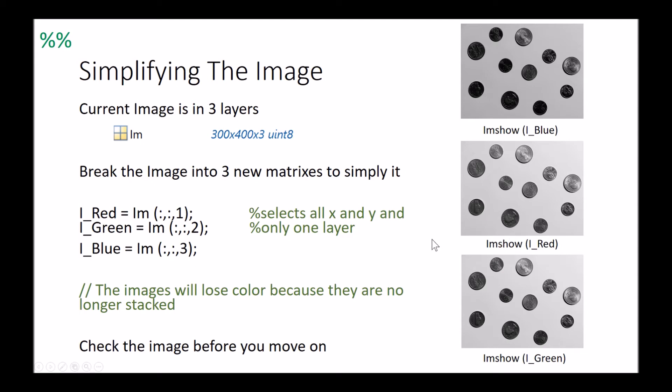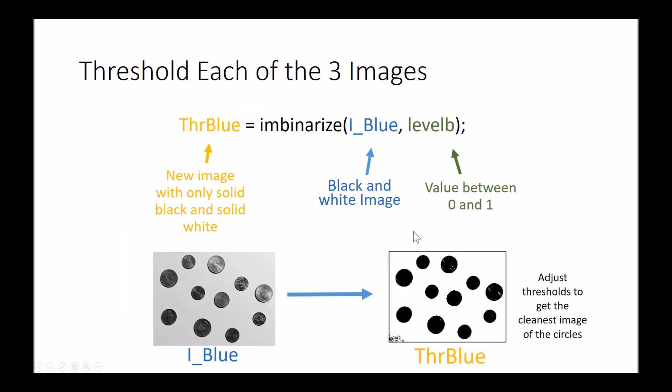I'm then going to use imbinarize and what that's going to do is it's going to allow me to select my image and give a threshold value. That threshold value is then going to take our image and sort it so that everything that's below that value will be white, everything that's above that value will be black.